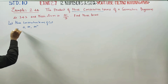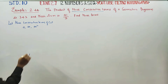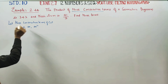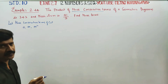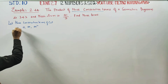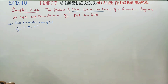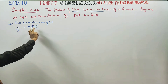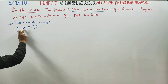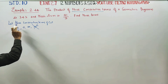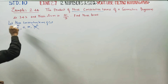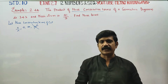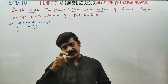Let the three consecutive terms of the GP be A by R, A, and AR. Three consecutive terms in GP — we always choose A by R, A, and AR.